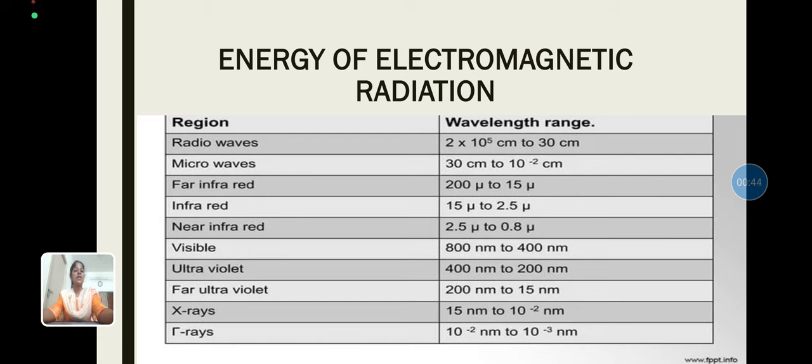Next, we see the energy of electromagnetic radiation. In this tabulation, we see the different electromagnetic regions for electromagnetic radiations in different wavelength ranges that start from 2×10^5 centimeters to 10^-2 nanometers. It ranges from radio waves up to gamma rays.